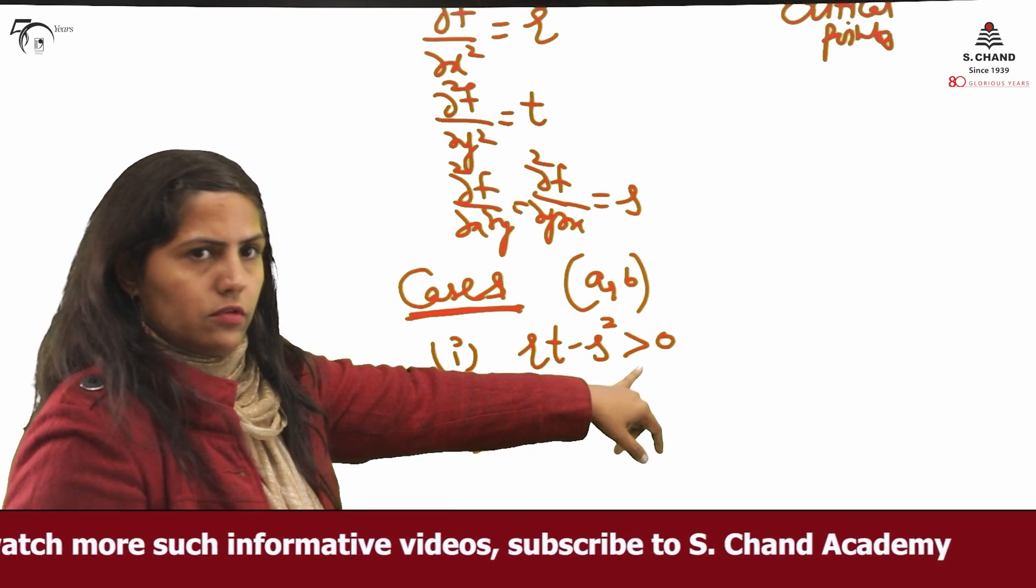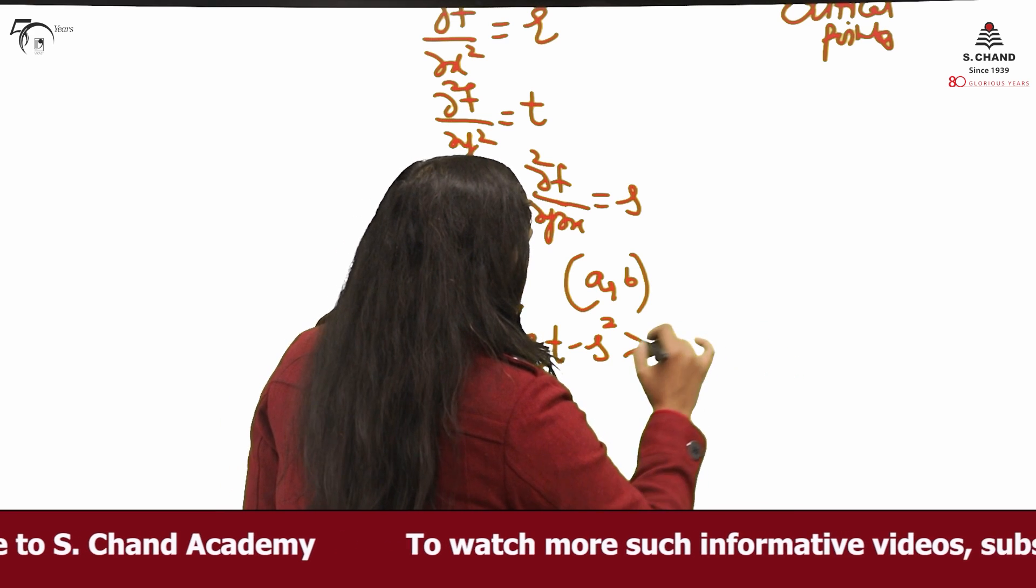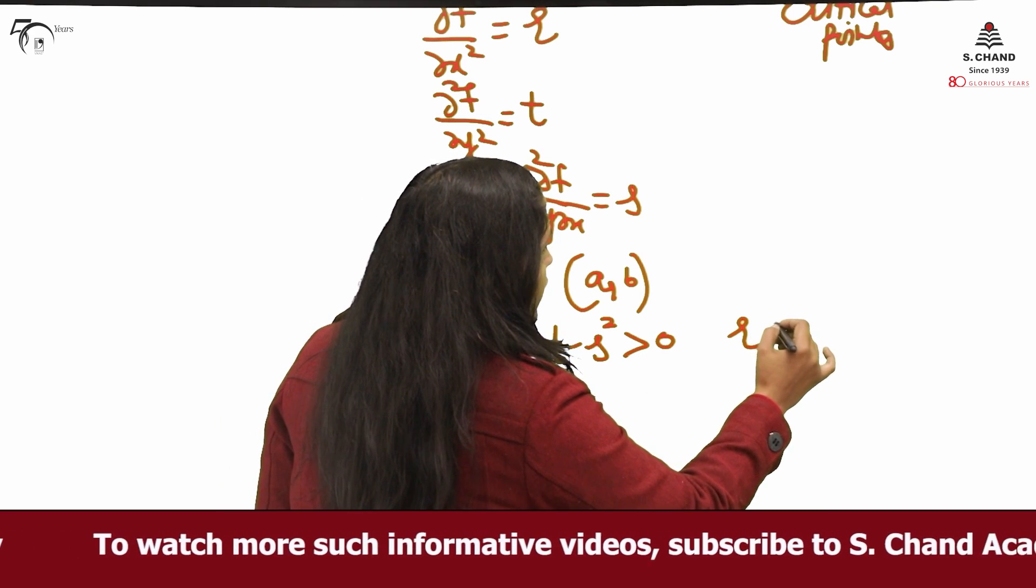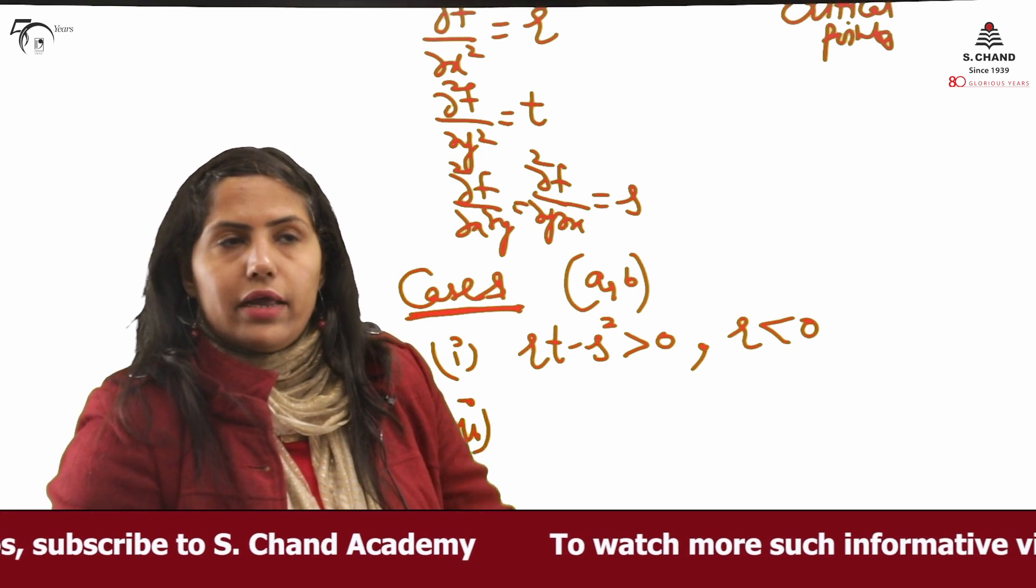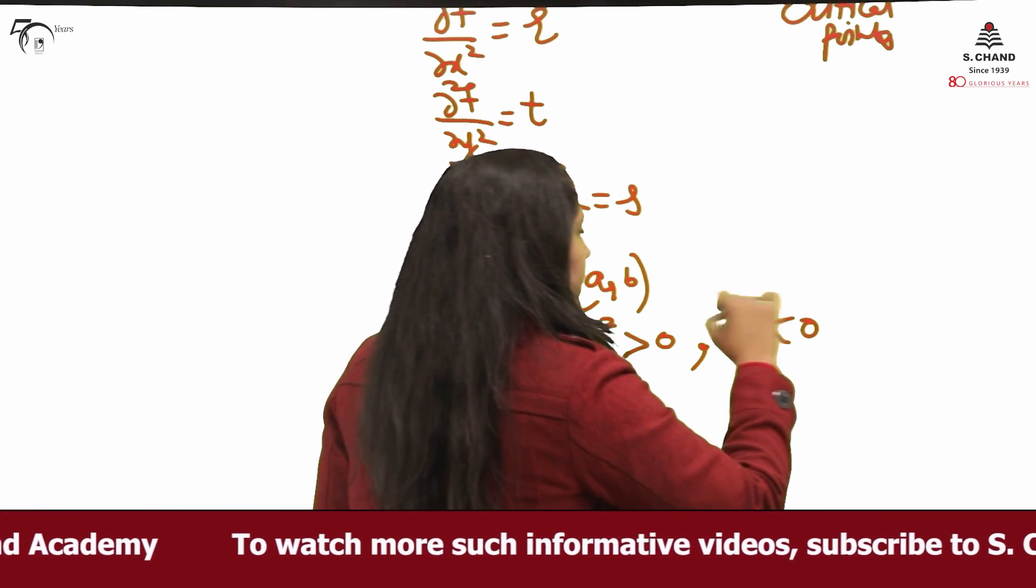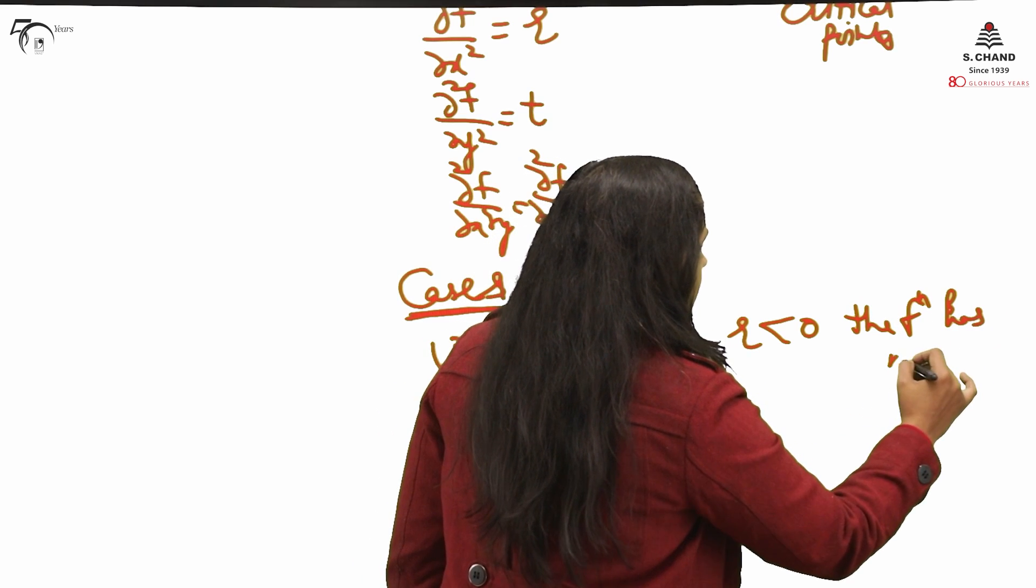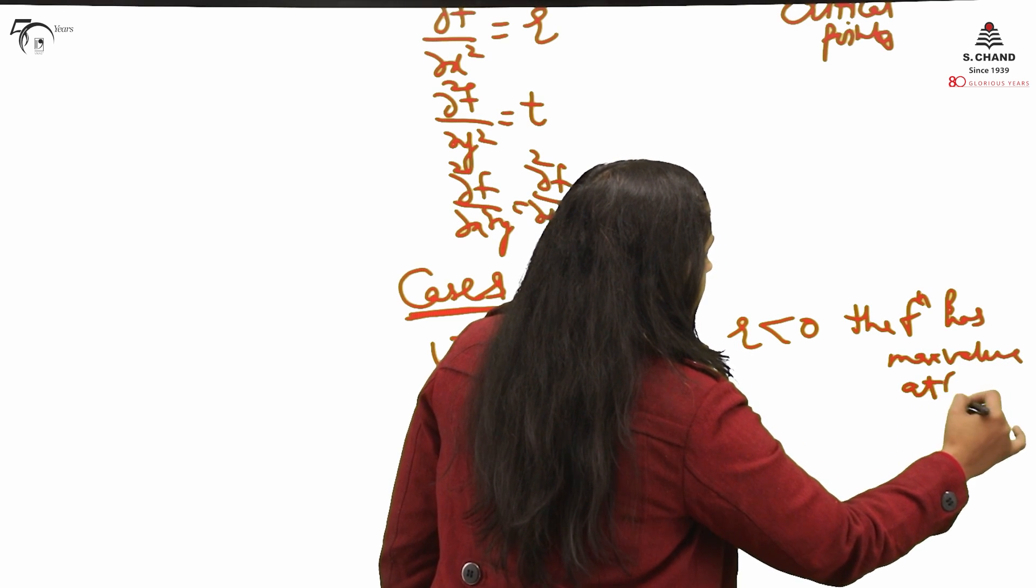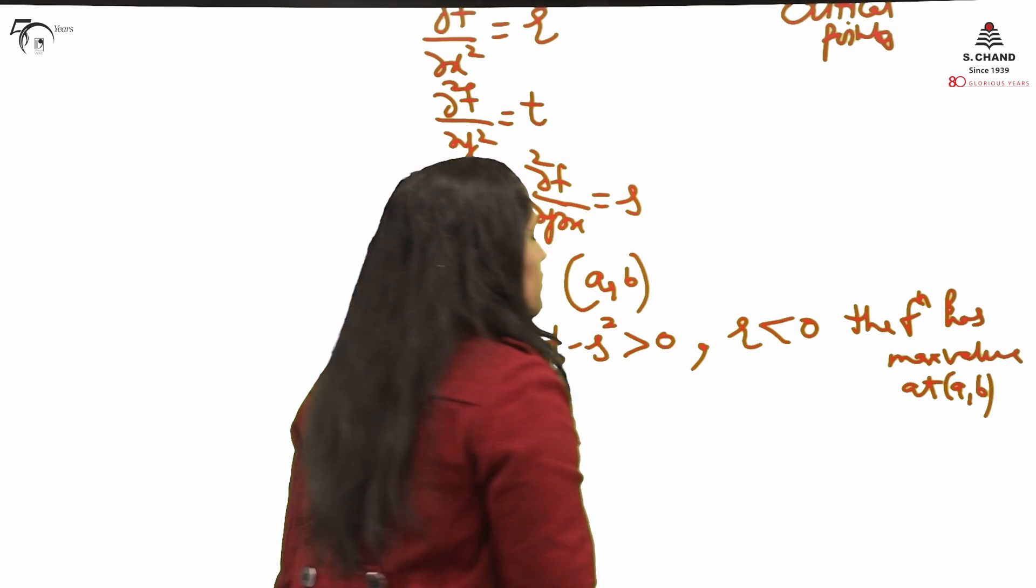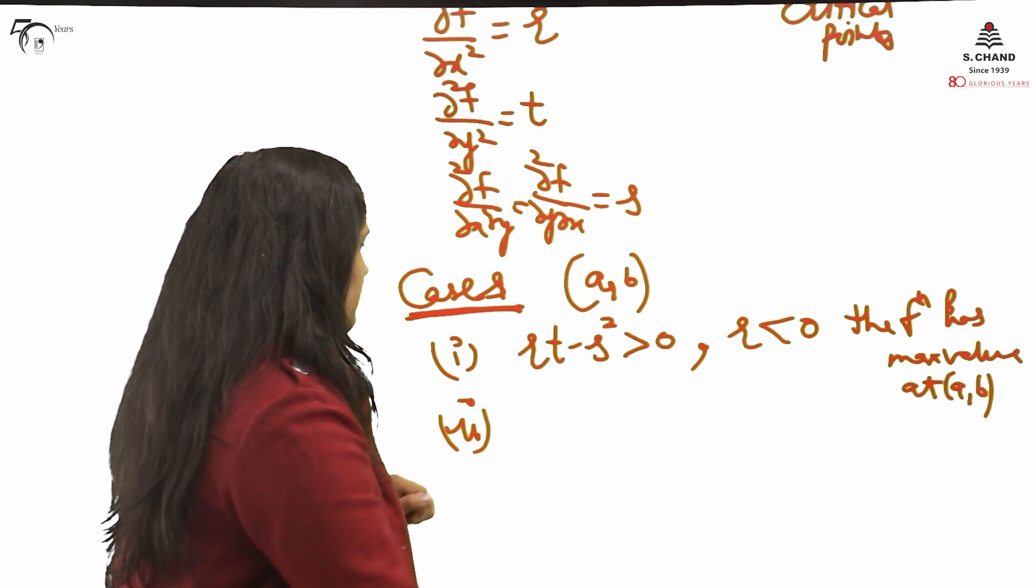So case first says if rt - s² at that particular point is positive, rt - s² is greater than 0, and your r is negative, the r value is negative, then in this case the function has maxima value at (a,b).